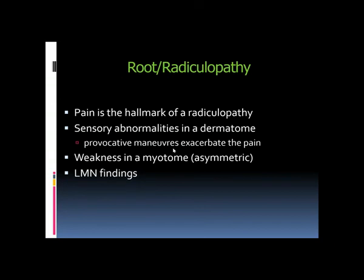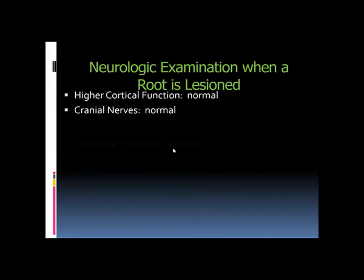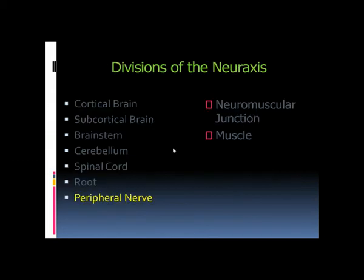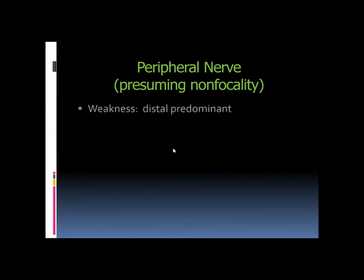Diffuse peripheral neuropathy — polyneuropathy — presents with distal predominant weakness and sensory symptoms such as paresthesias or numbness, as in diabetic neuropathy with glove-and-stocking sensory impairment. Higher cortical, cranial nerve, and cerebellar functions are normal. Deep tendon reflexes are lost; plantar responses are either downgoing or mute. No pathological reflexes are present.